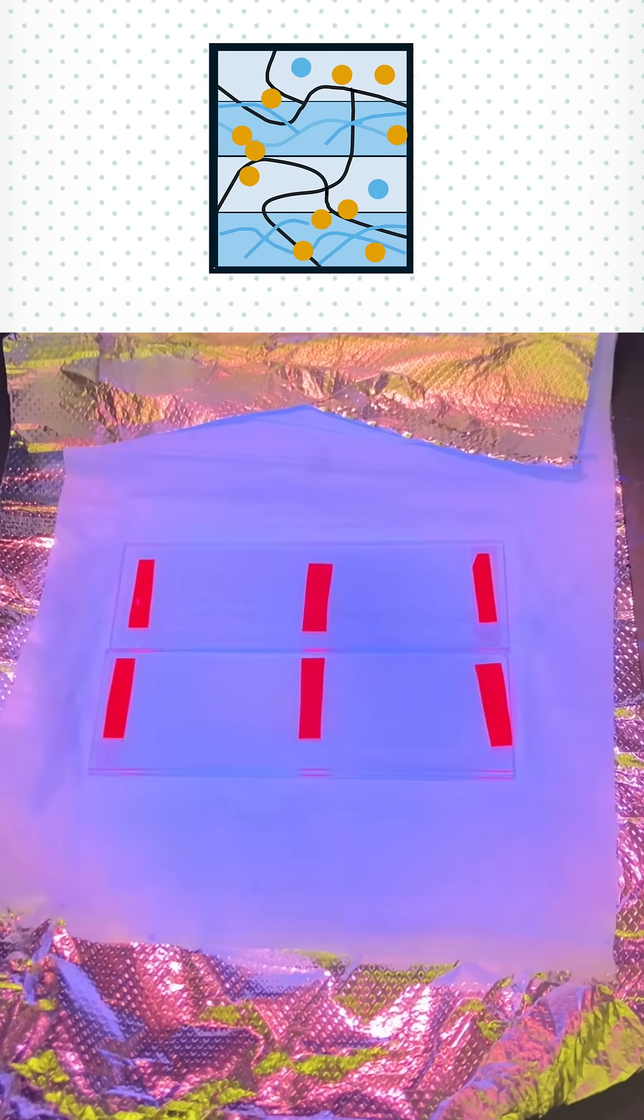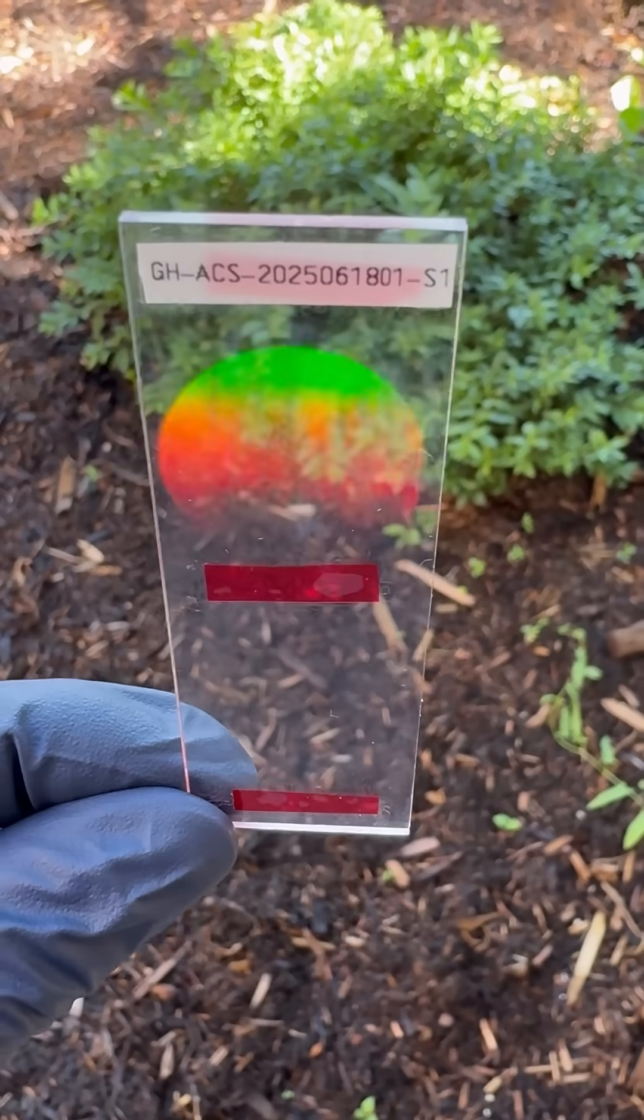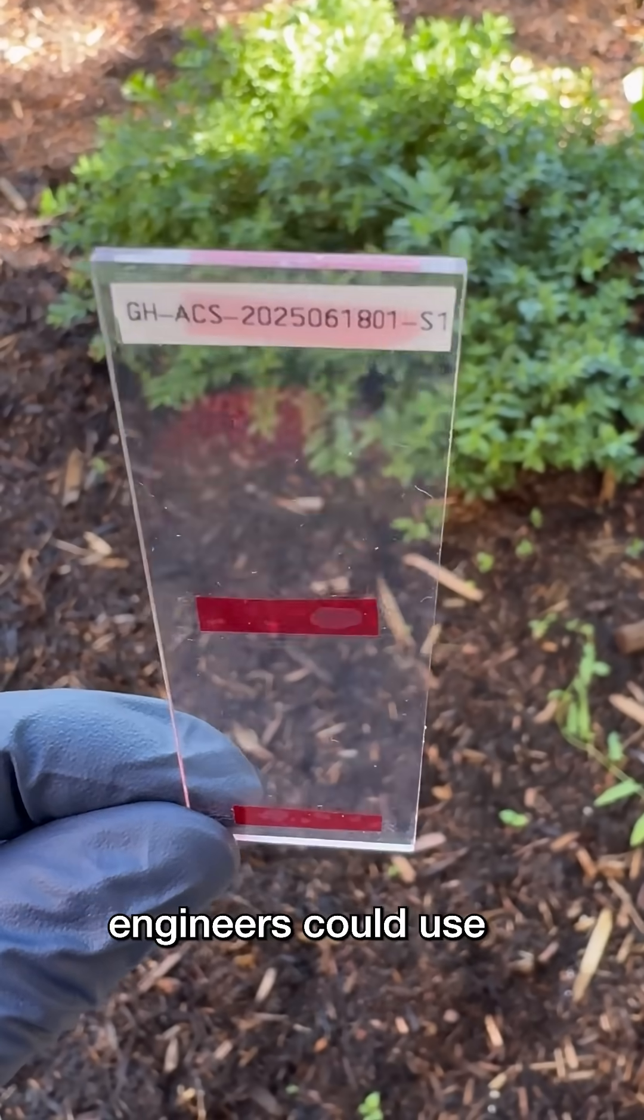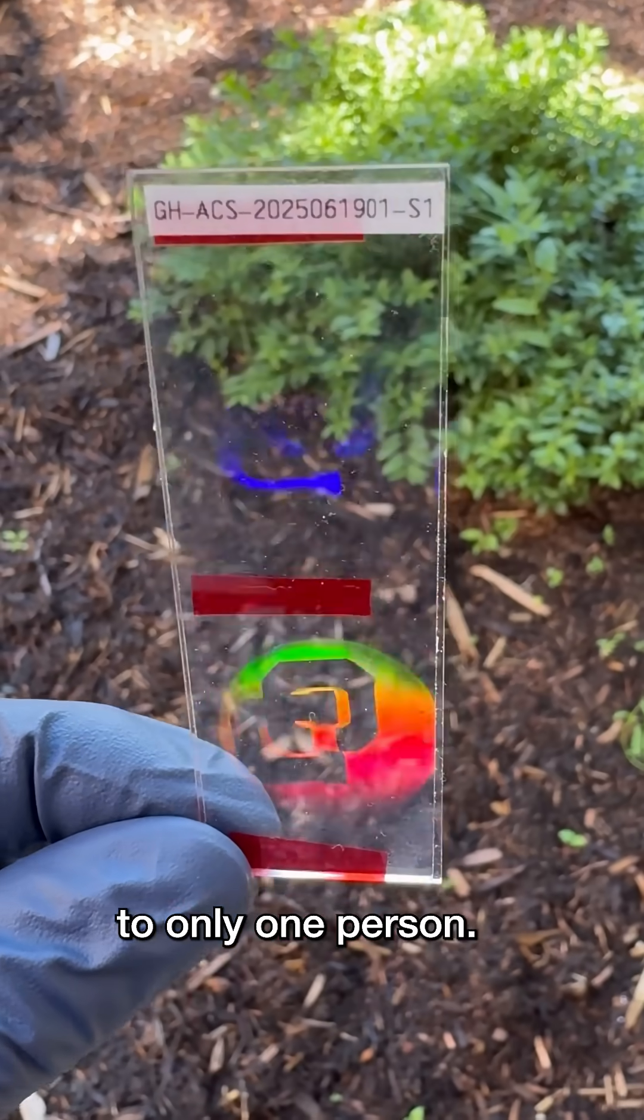Then they activate a reaction between the epoxide molecules, locking the other polymers into place. Since the colors you see depend on the angle of diffracted light, engineers could use the film to make transparent displays where projected images are visible to only one person.